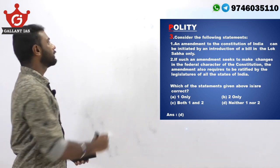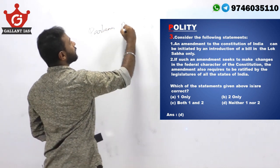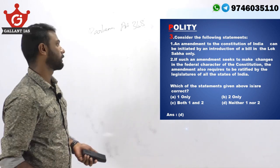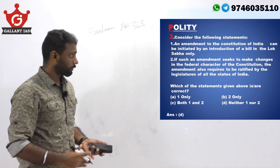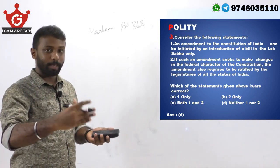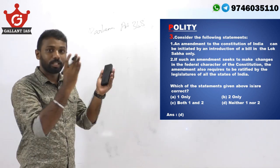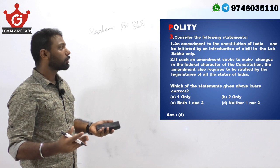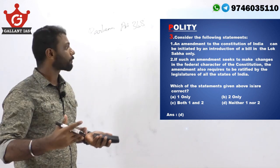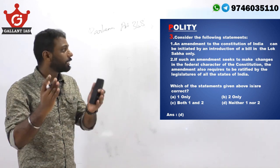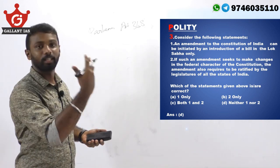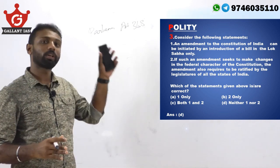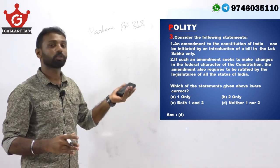Parliament has the amending power under Article 368 of the constitution. When a bill is to be passed for amendment, some bills can be introduced only in the Lok Sabha or only in the Rajya Sabha — for example, a money bill can be introduced only in the Lok Sabha. When parliament wants to make a law on a state list item, it must pass a resolution movable only in the Rajya Sabha. However, a constitutional amendment bill can be introduced in either house — Lok Sabha or Rajya Sabha — so it is not necessary that it be introduced only in the Lok Sabha.